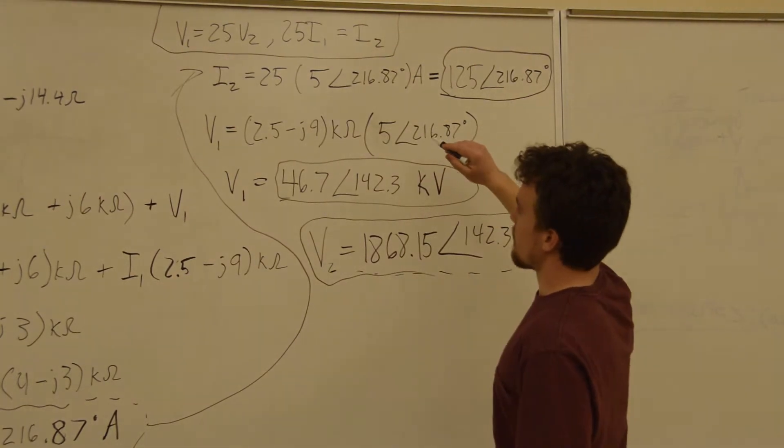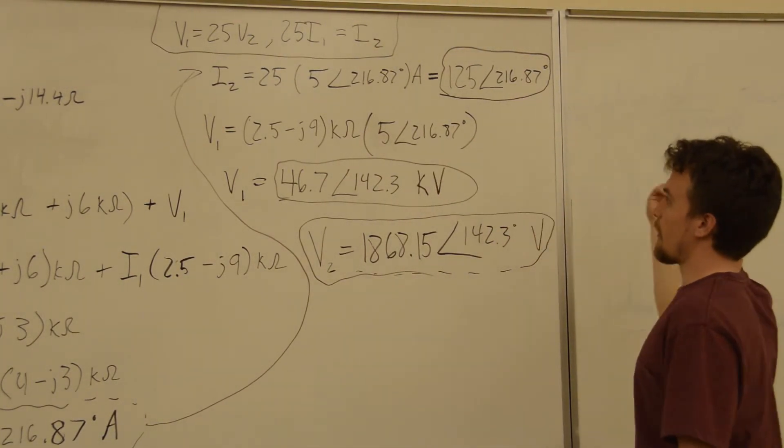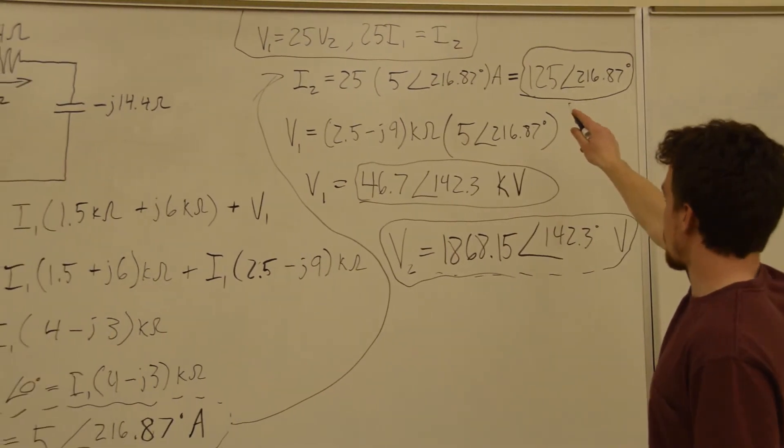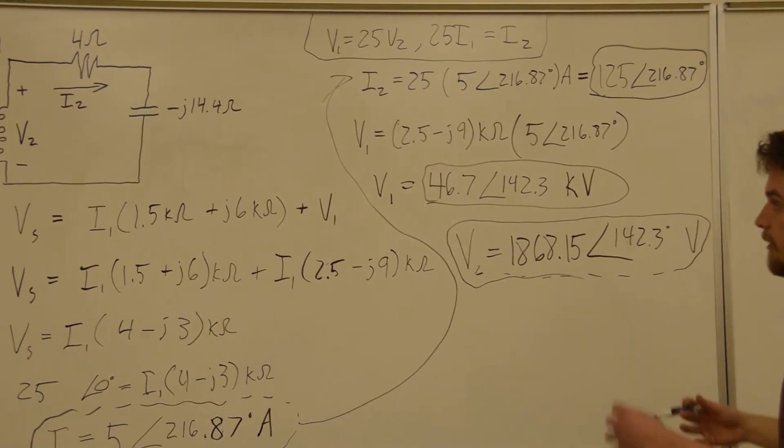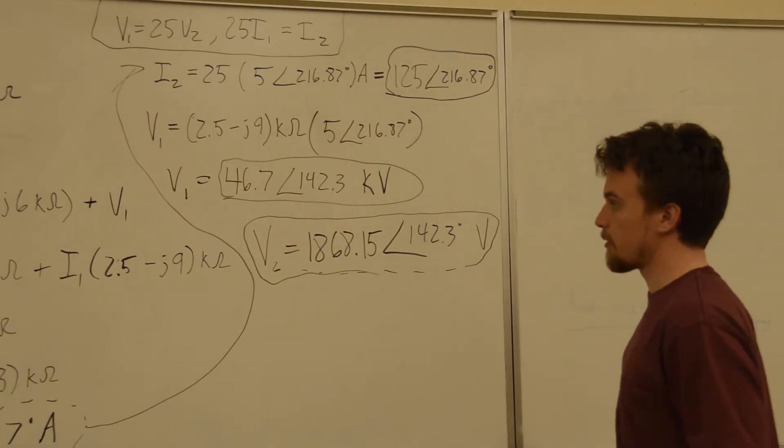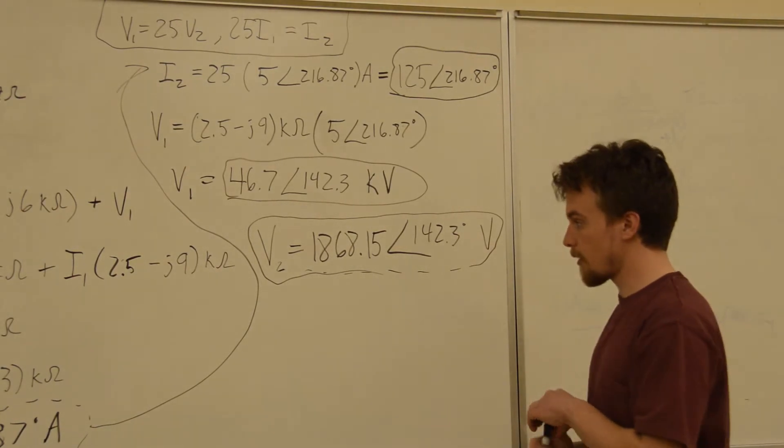But, we can see from the values of the currents that the current in our left side is quite a bit larger. It's 125 versus I1 is 5. So, that's the trade-off. That's the relationship. It just transforms voltage down, current up. Or, you can do vice versa, depending on how you set it up.